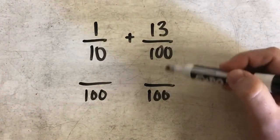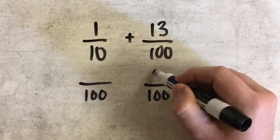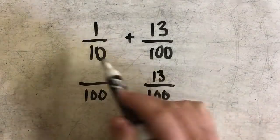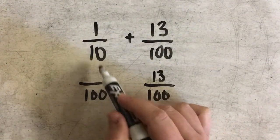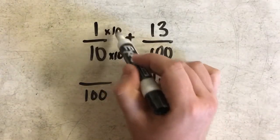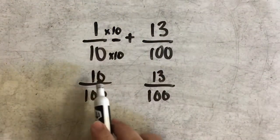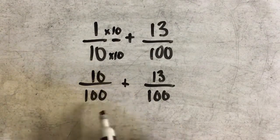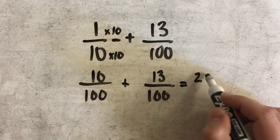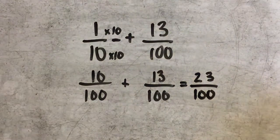Again, to get from this 100 to that 100, I did nothing, so I'm going to do nothing to my numerator — 13 will remain the same, and these are equivalent fractions because they're the same fraction. But over here, I multiplied 10 by 10 to get to 100, so I also need to multiply my numerator by 10. 1 times 10 gives me 10. Now since I have common denominators, I can add just my numerators: 10 plus 13 gives me 23. My denominator stays the same, so my answer would be 23 hundredths.